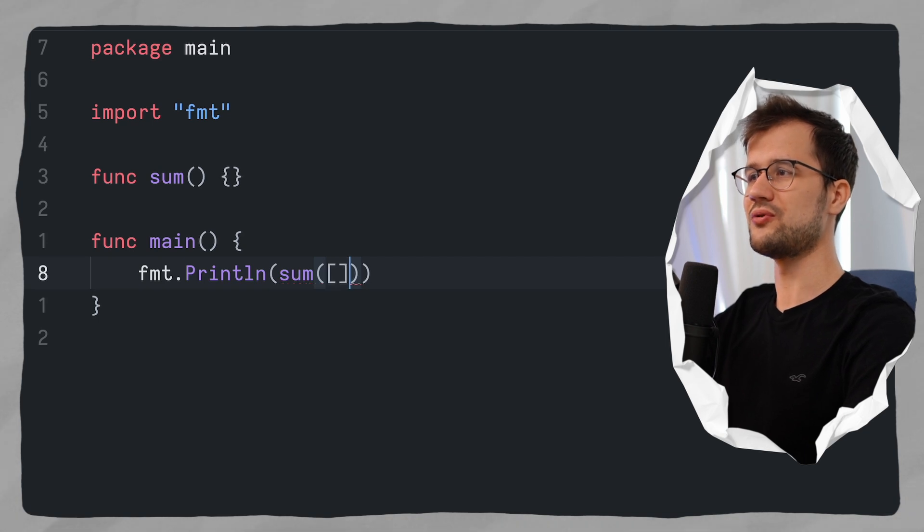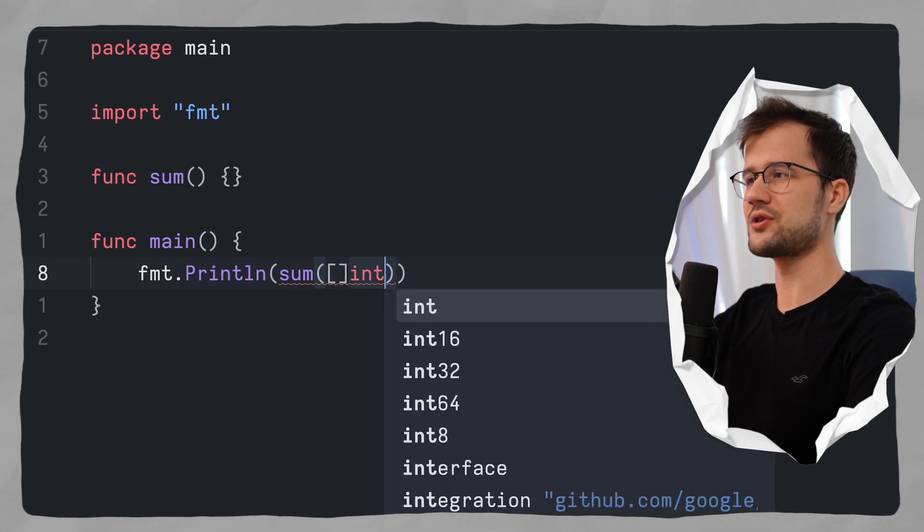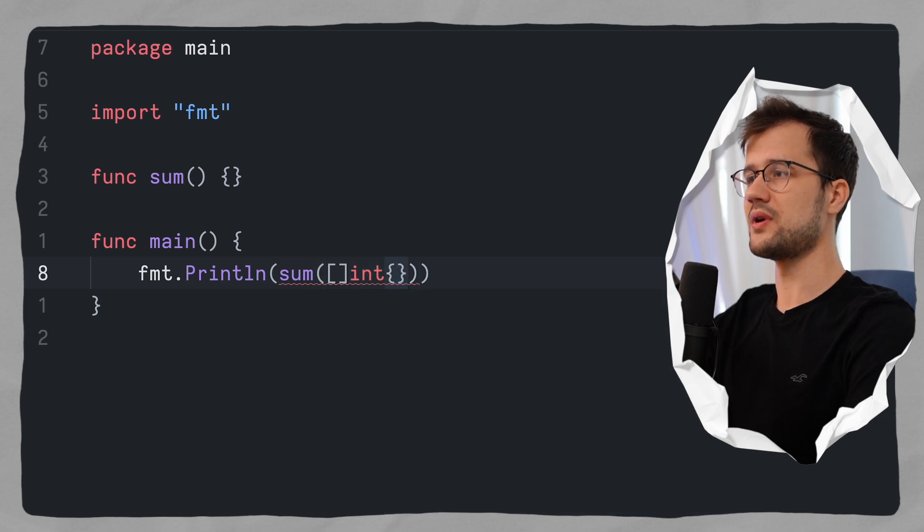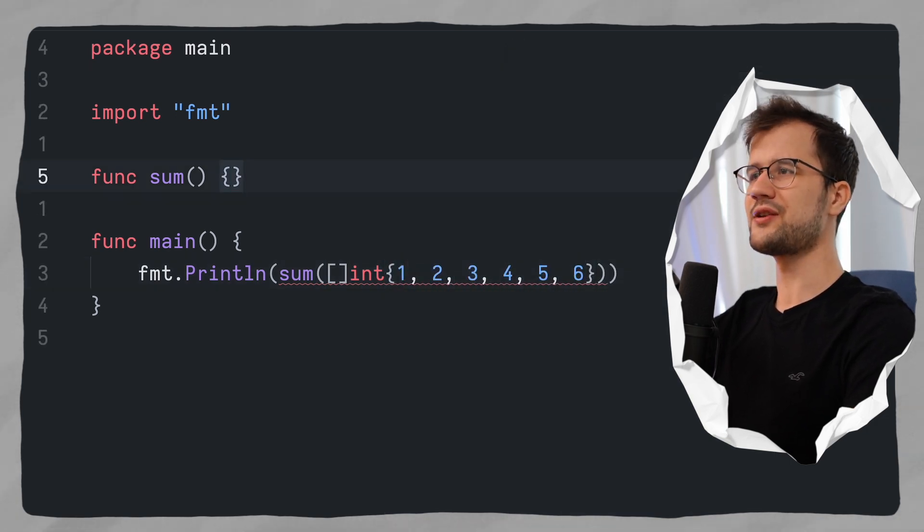Now for now I'm going to demonstrate the bad example, which is just going to declare an int slice. And in here we're going to say 1, 2, 3, 4, 5, 6, for instance. And then let's just quickly do this function definition.